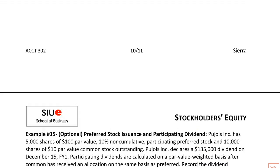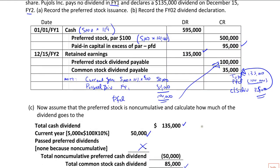We're going to skip the optional participating example. That is it for the stockholders' equity lecture. Know about the participating dividend — it strictly increases the preferred stock dividend, and it is a dividend in excess of the normal preferred dividend. We will not do a quantitative problem on it, but you should know it's going to result in more than $50,000 going to preferred.